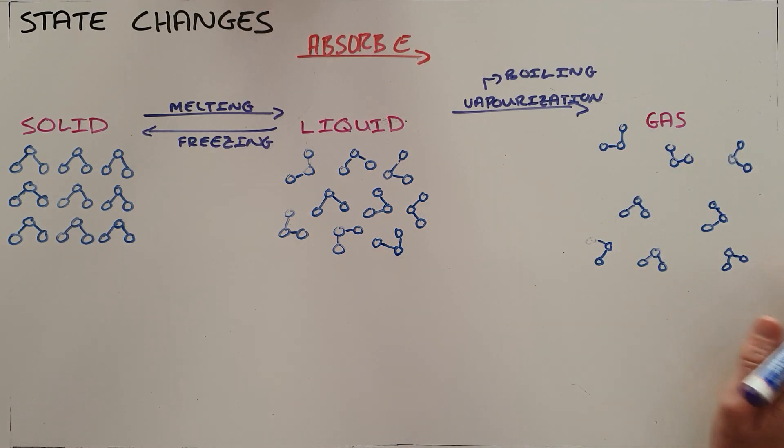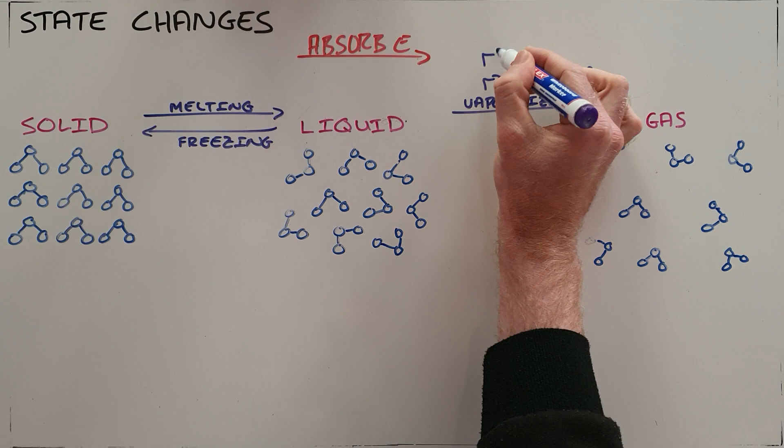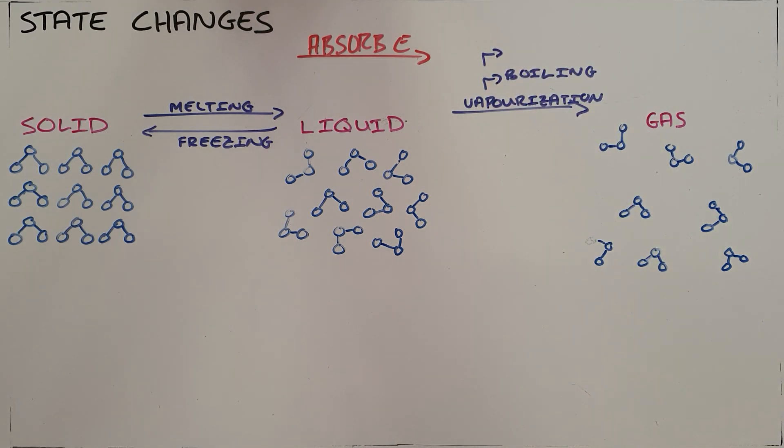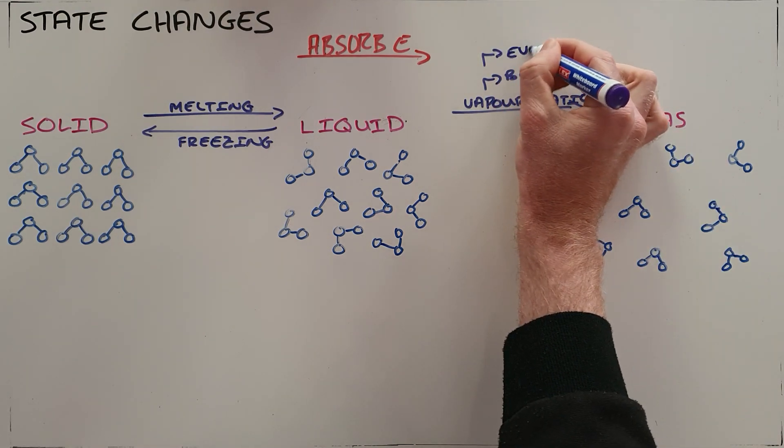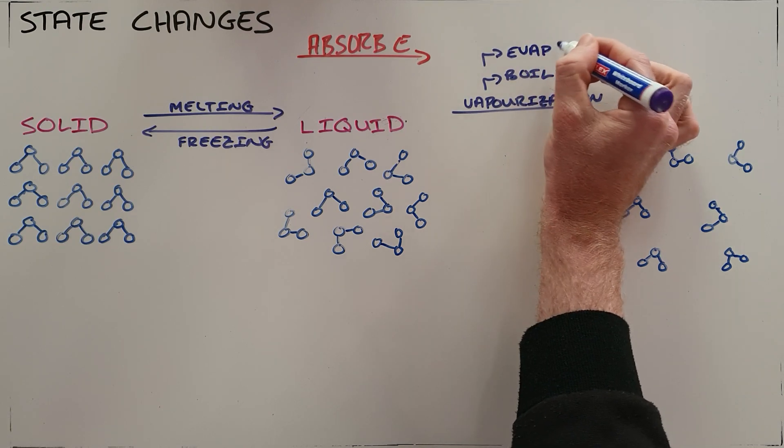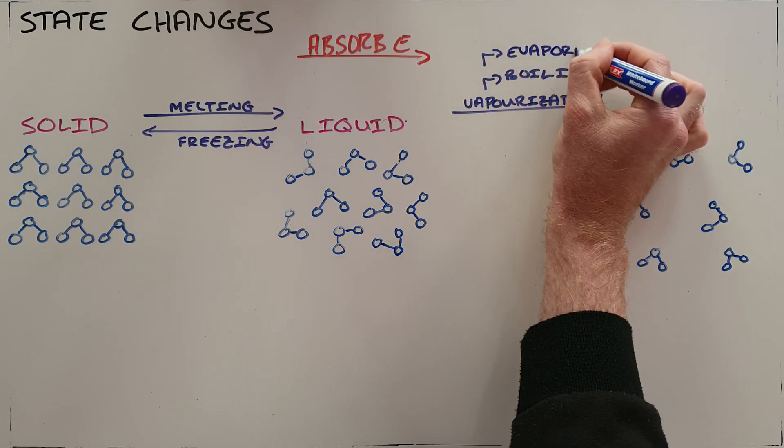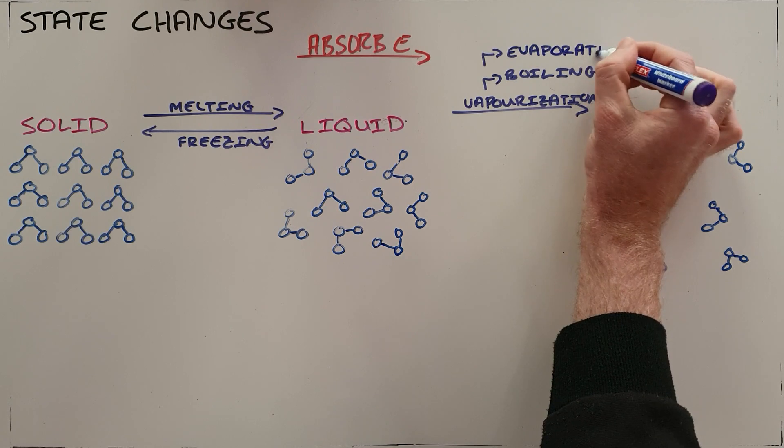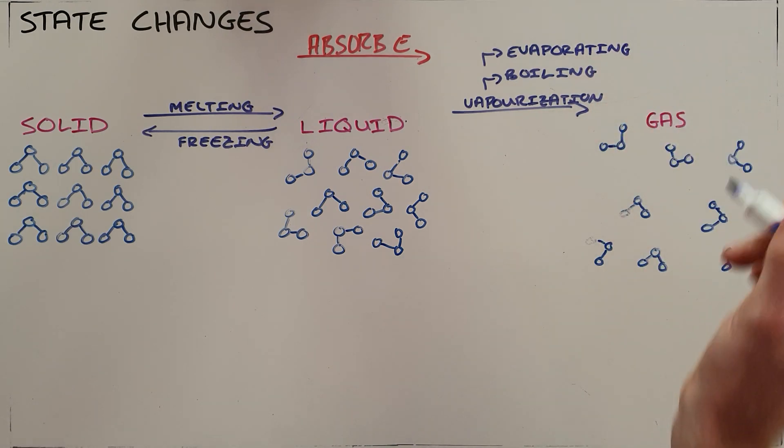We also know that there is another form of vaporization known as evaporating. Evaporating is when only the liquid on the surface, only the particles on the surface, are able to gain enough energy to escape and become a gas.